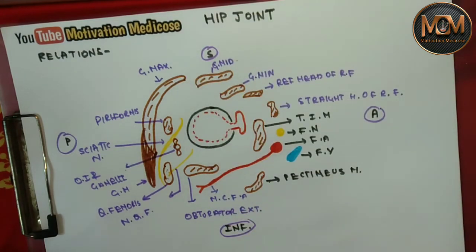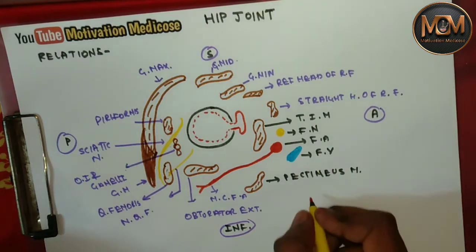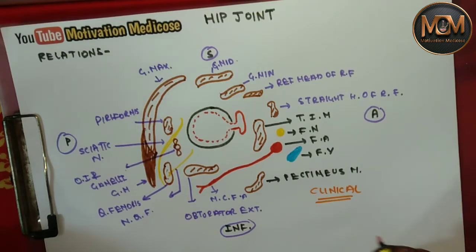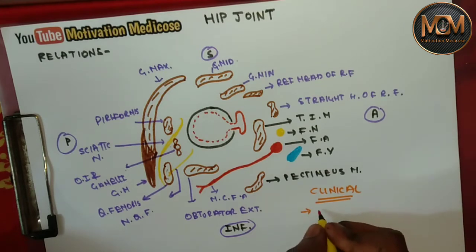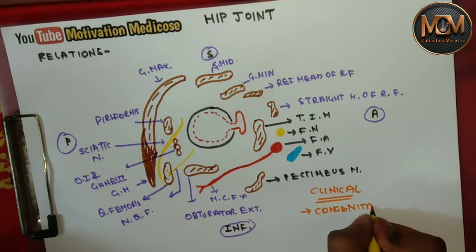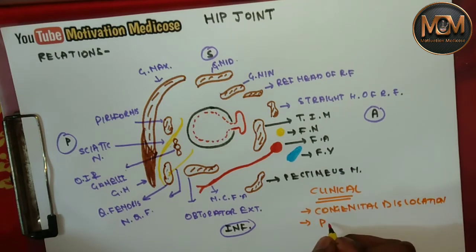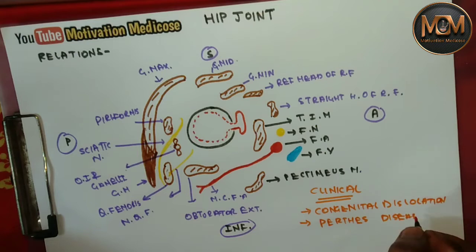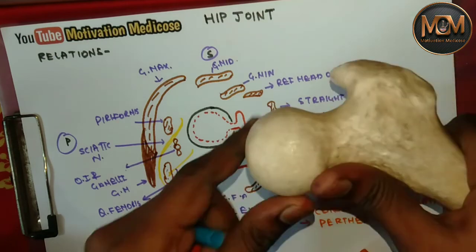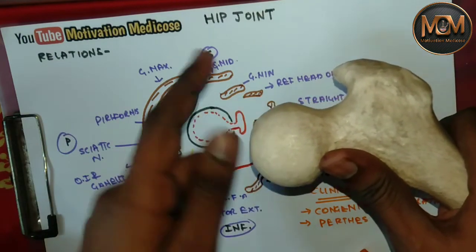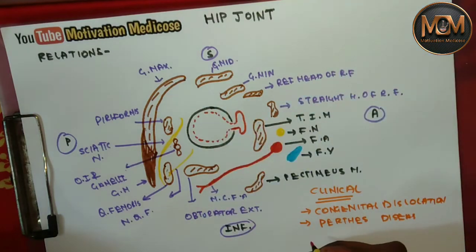Now let's come to the clinical anatomy of the hip joint. The first clinical condition is congenital dislocation — dislocation present from birth — which can be anterior, posterior, or central. The second clinical condition is Perthes disease, where the head of the femur gets flattened or degenerated.